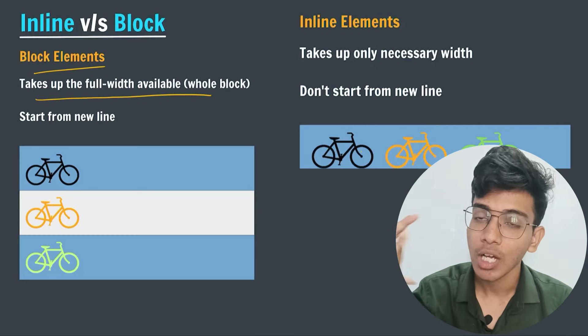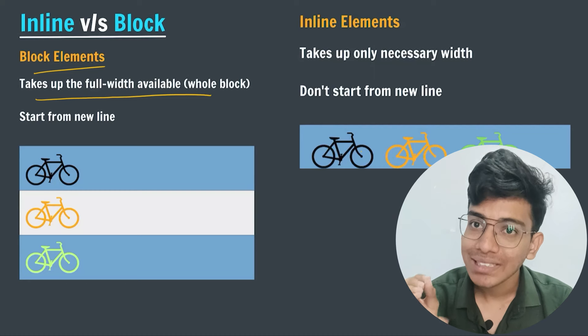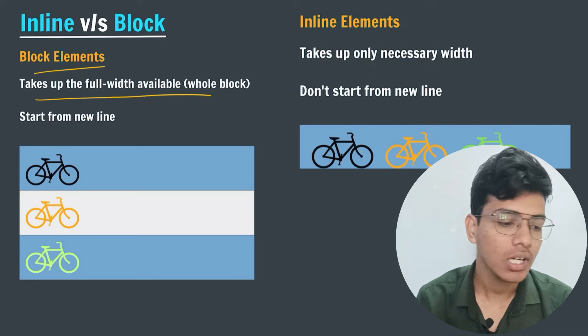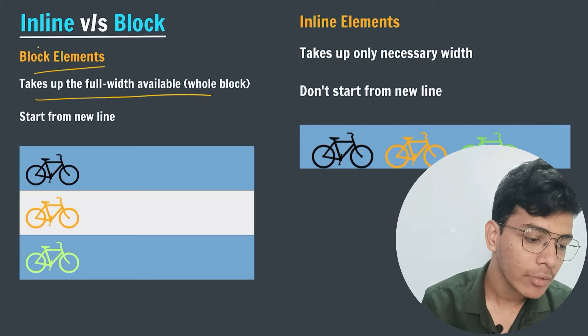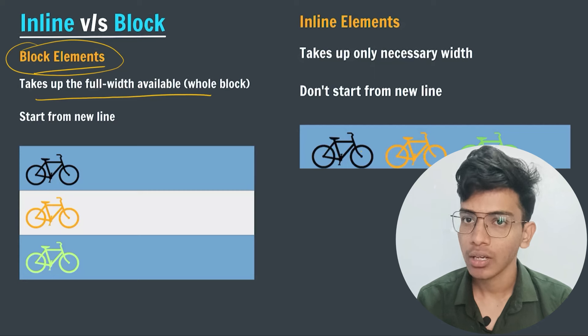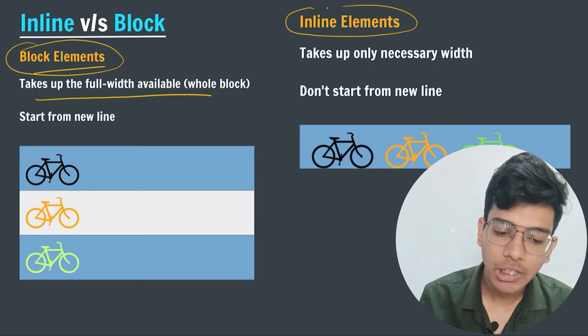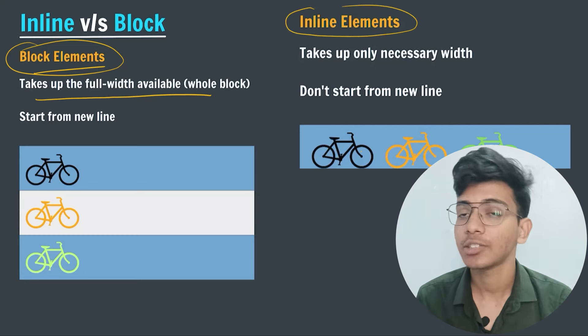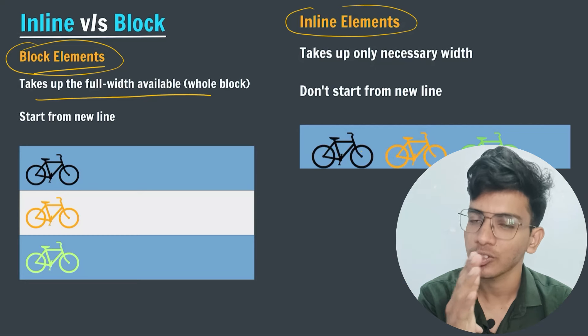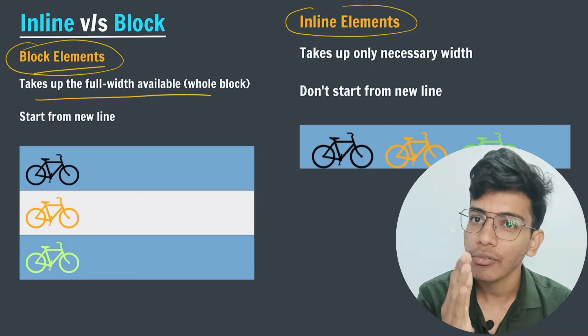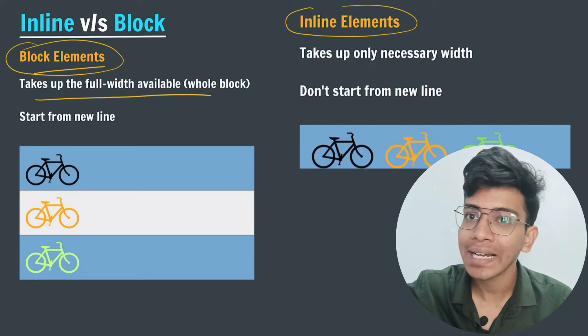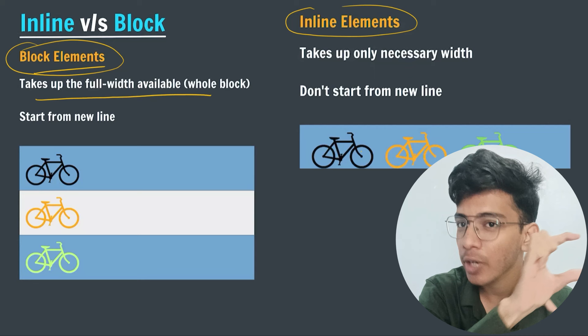The next element will come on a new line. Elements having this nature are known as block elements. Whenever you create a new element after a block element, it will come on a new line. Whereas inline elements are elements which take only the necessary space — if your content takes only half the screen, the inline element will take only half the screen and will not occupy the entire block.